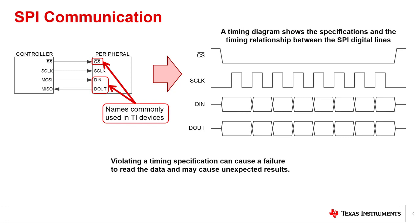In a previous video, we discussed how data is clocked into and out of precision data converters using the four digital lines of SPI. An active low peripheral select line, commonly known as chip select, is used to select the device for communication. A serial clock, or S-Clock, clocks data in and out of the peripheral device to the controller. Finally, data lines of MOSI and MISO, commonly named DIN and DOUT for the peripheral device, are used to send the data.